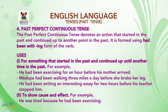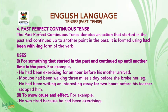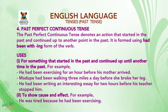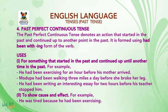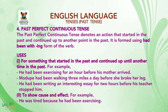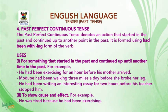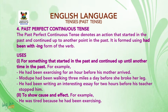Uses of the Past Perfect Continuous Tense: 1. It is used for something that started in the past and continued up until another time in the past. For example: He had been exercising for an hour before his mother arrived. Mudupe had been walking 3 miles a day before she broke her leg. He had been writing an interesting essay for 2 hours before his teacher stopped him. 2. To show cause and effect: He was tired because he had been exercising.